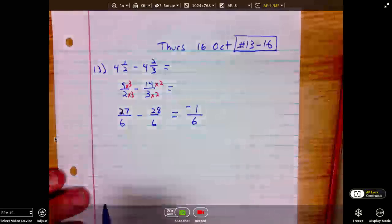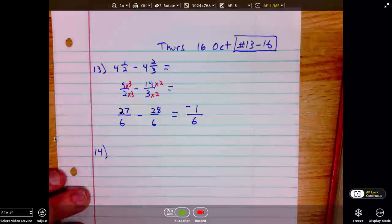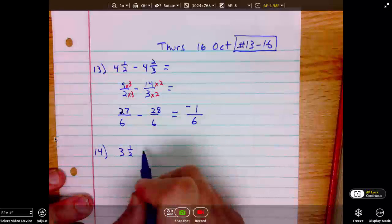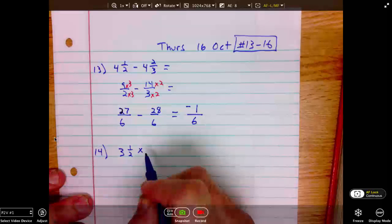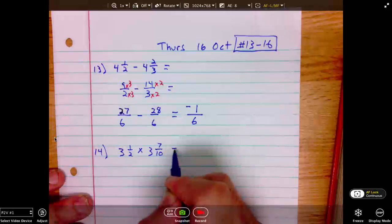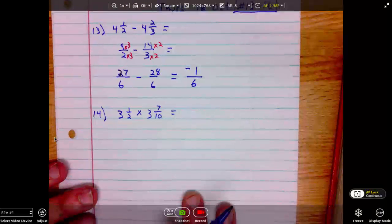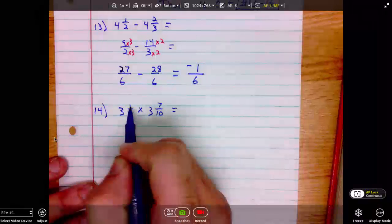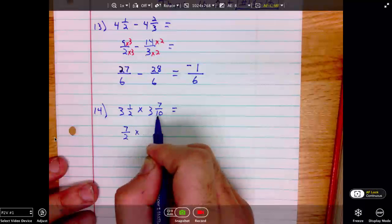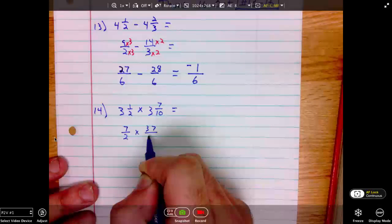Next, number 14. 3 and 1 half times 3 and 7 tenths. We will first convert to an improper fraction. 3 times 2 is 6 plus 1 is 7. 7 over 2. 3 times 10 is 30 plus 7 is 37. 37 over 10.